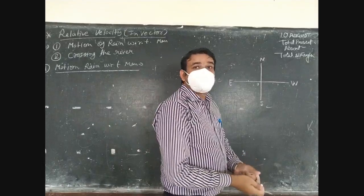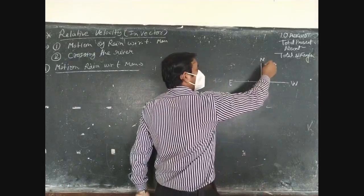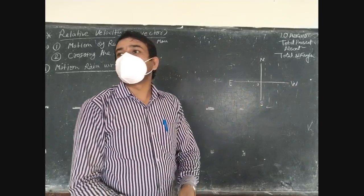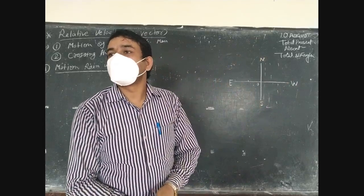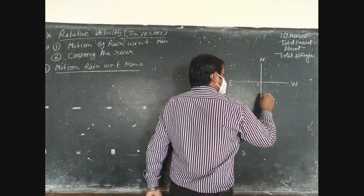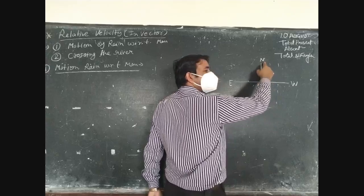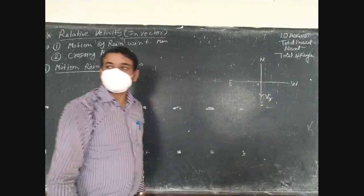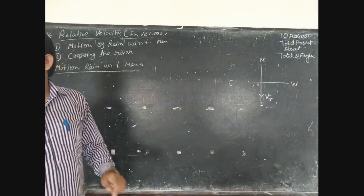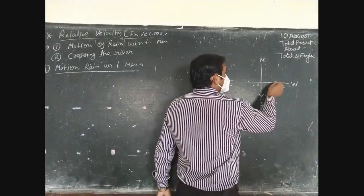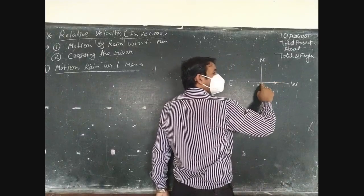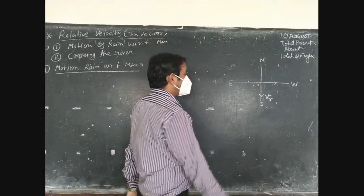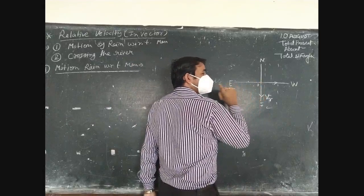So the velocity of rain is taken in the y-axis as Vr. In the situation, it is given that the person is moving from its point in the direction west, or the person is moving towards east — two things are there.